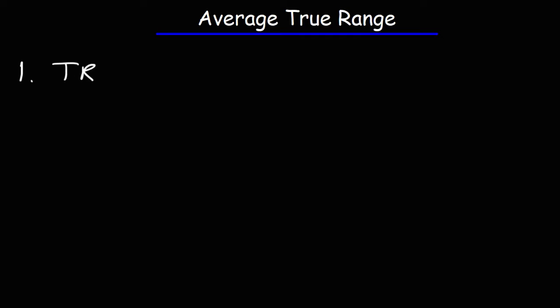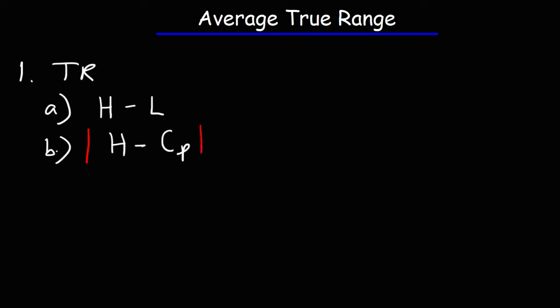The first thing you need to do is calculate the true range, and there are three formulas that will help you do so. The first one is to take the current high and subtract it by the current low. The second one is to take the absolute value of the current high minus the previous close. And the third formula is to take the current low and subtract it by the previous close. Whichever of these three values is the greatest, that's going to be the true range for that day.